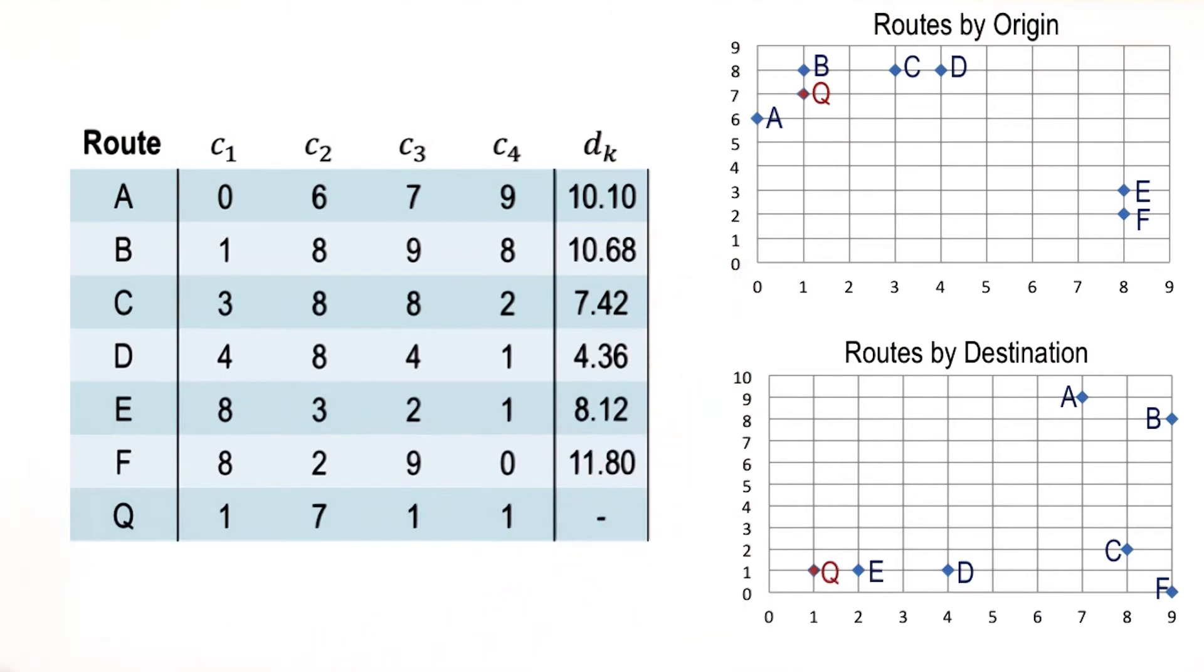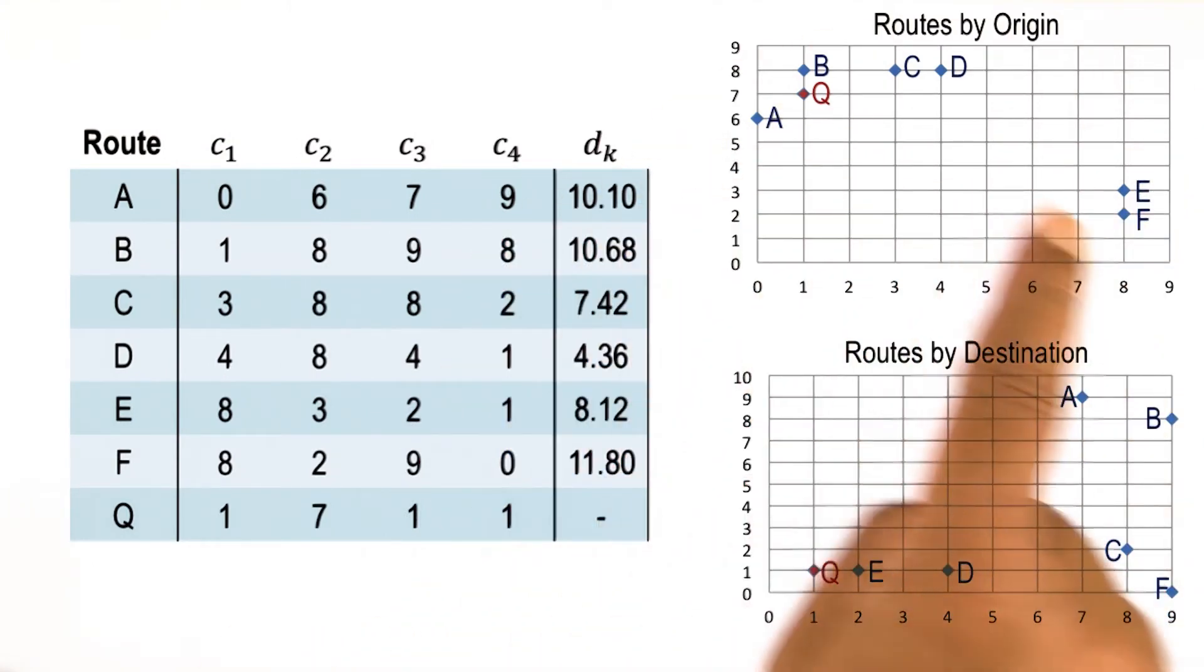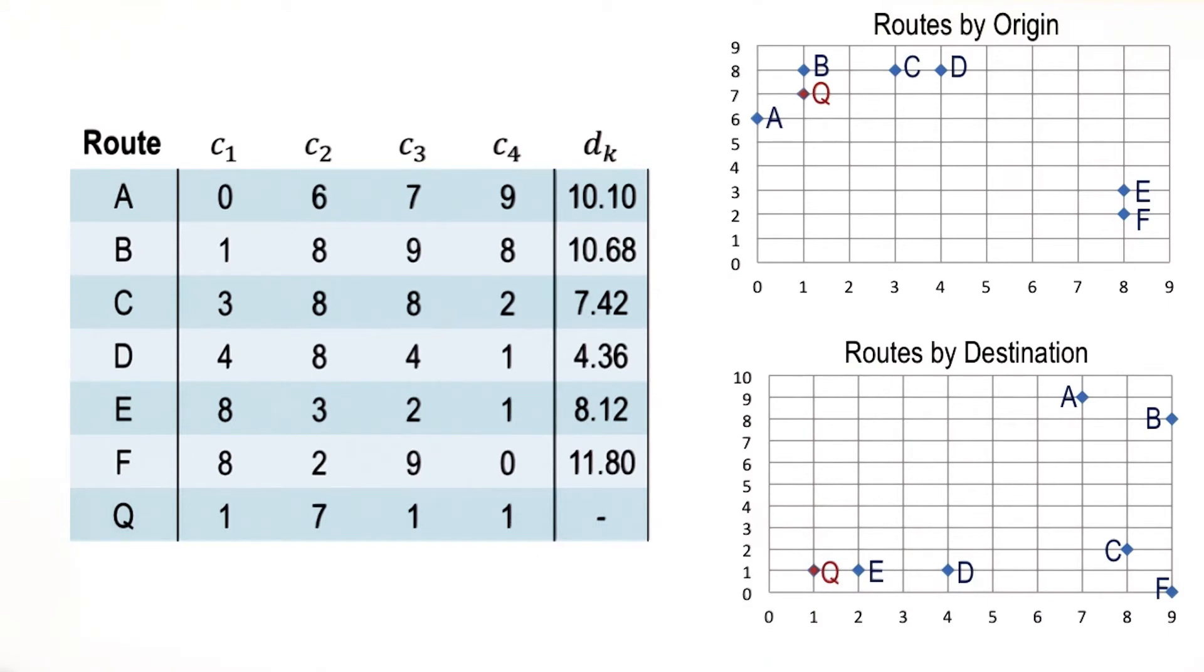So this table summarizes Euclidean distance between the cases and the new problem in this multidimensional space where we are dealing both with the origin and the destination, and where the origin as well as the destination are specified by the x and y coordinates.